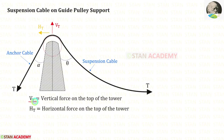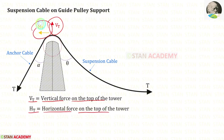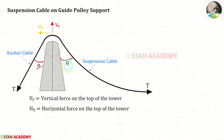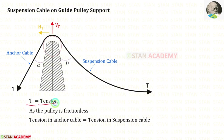Let us keep Vt as the vertical force on the top of the tower and Ht as the horizontal force on the top of the tower. Let us keep this angle as alpha and this angle as theta. T is the tension — this is the tension in the anchor cable and it is the tension in the suspension cable.